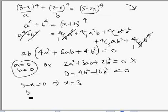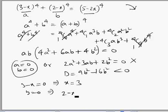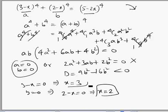And b = 0 means 2 - x = 0, which gives x = 2. So we get x = 3 and x = 2 as the two real roots of this degree 4 equation.